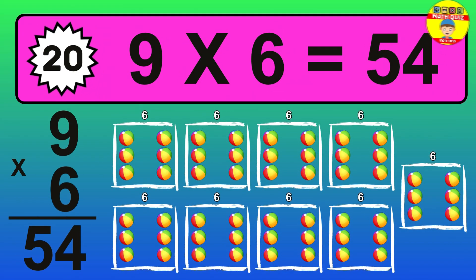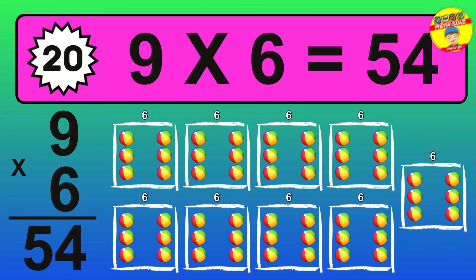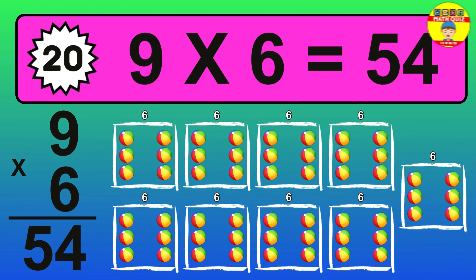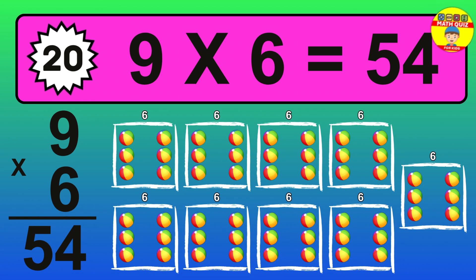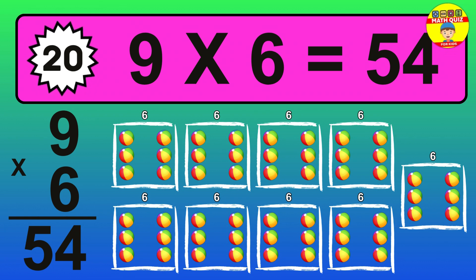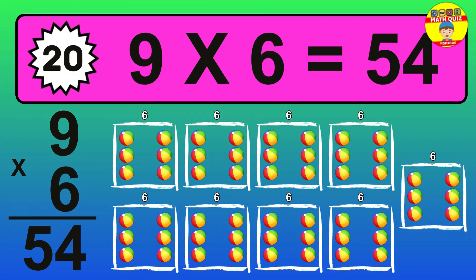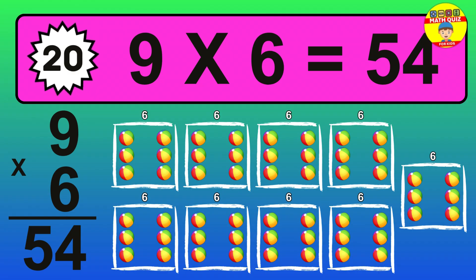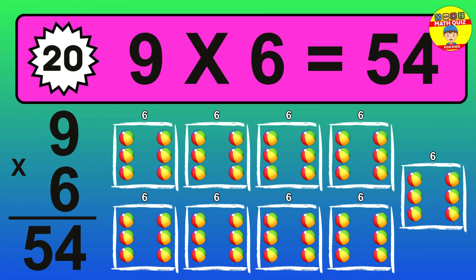The answer is 9 times 6 is 54. To calculate, we have 9 groups with 6 balls each one. So, how many balls do we have? 54 balls.